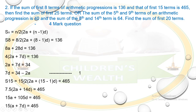Now for the second condition: the sum of the first 15 terms is 465, so S₁₅ = 15/2 × (2a + 14d) = 465.